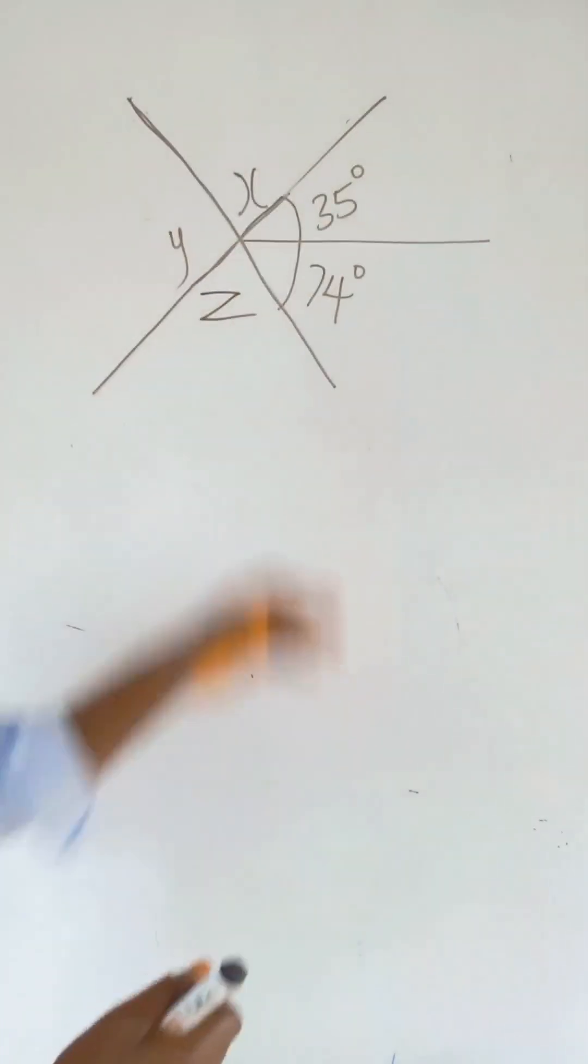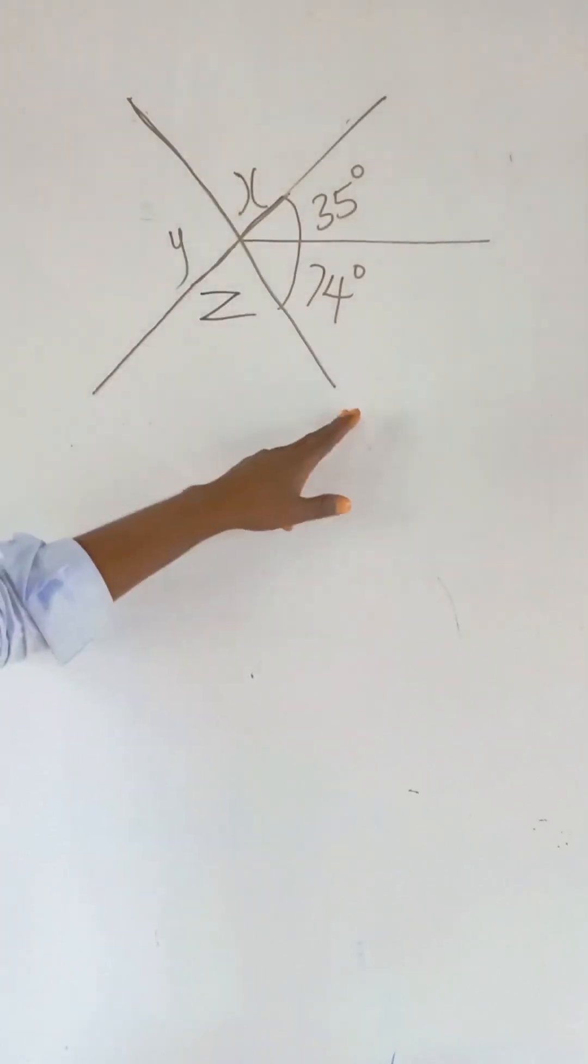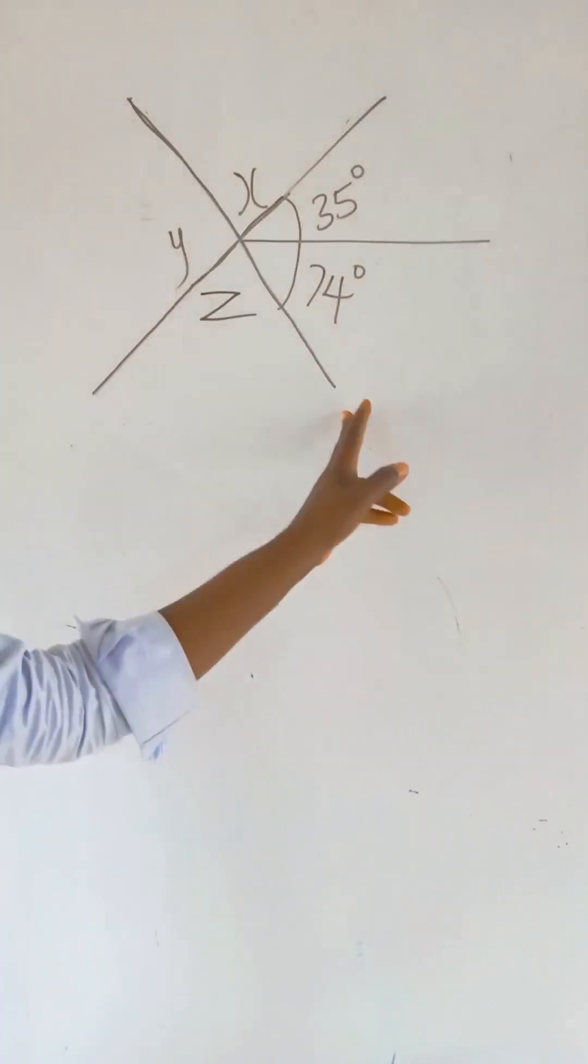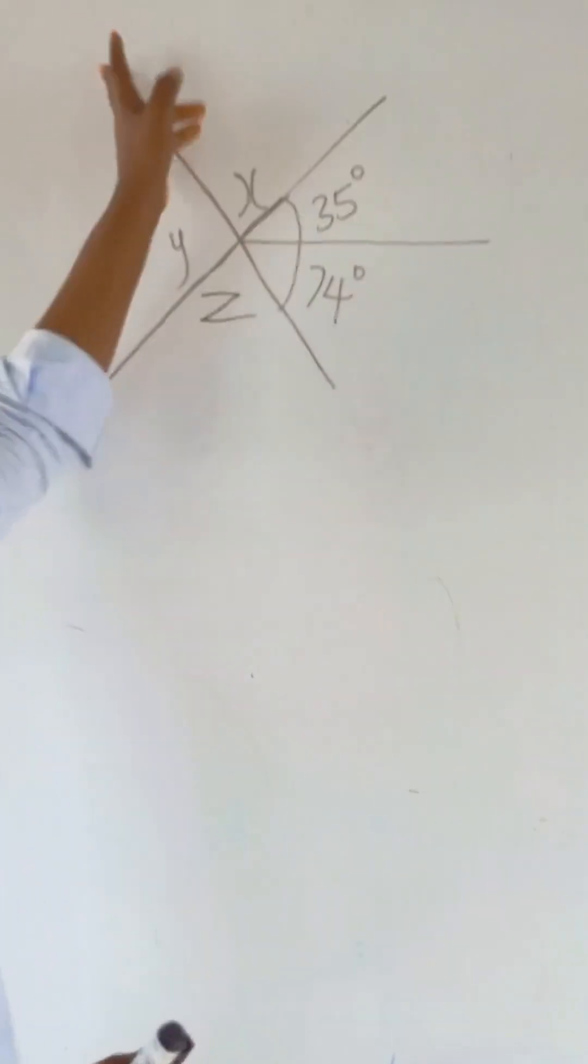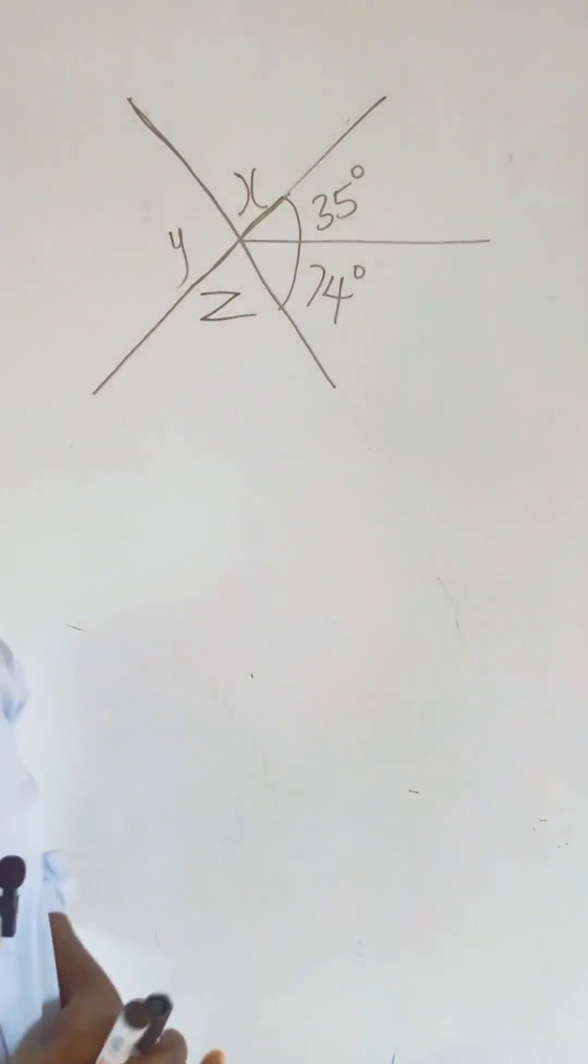If you look at this place, if you take it from here to here, you see that this is half of it, and this place is half, which means the angle on a straight line is 180 degrees.